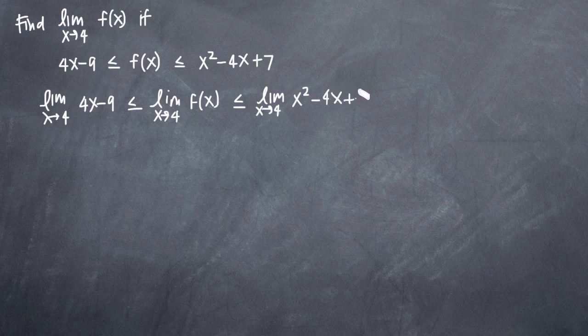Basically the idea being that if we're going to apply this limit as x approaches 4 to f(x), we also have to apply it to the 4x minus 9 and the x squared minus 4x plus 7 because they're all twisted up in the same inequality. What you do to one piece of it, you have to do to each piece of it.